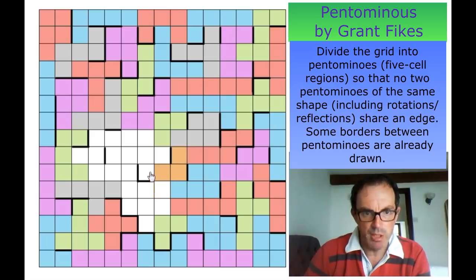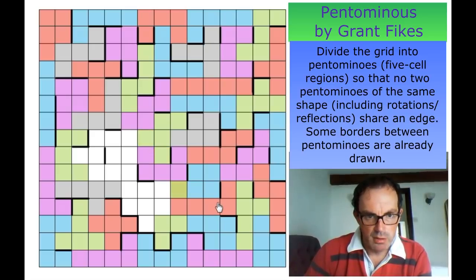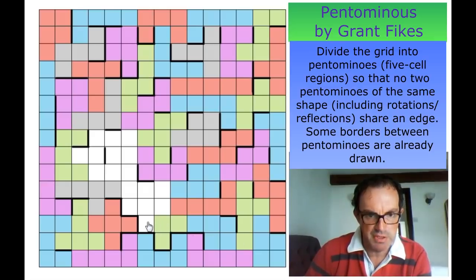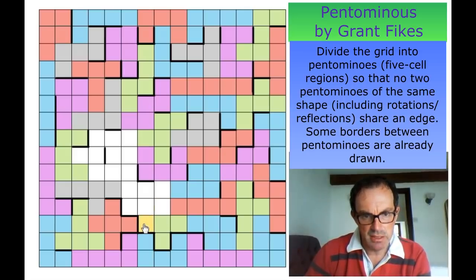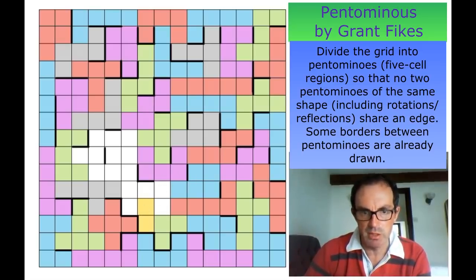Which means the only way the purple region can develop is like that, which fixes the green as an F. Now presumably I just have to be careful about what this region does. If this region can't be an X, and if it's an F like that, the U would be four cells — it would be forced to be a U connecting to this U. So that does not work.